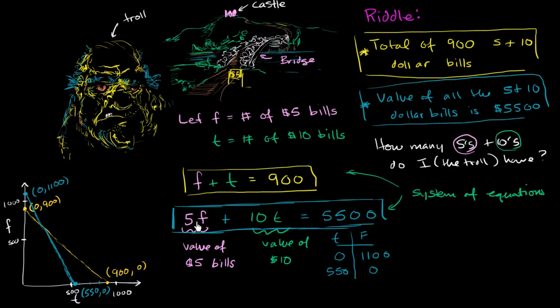So what is a number of fives and number of tens that satisfy both constraints? Well, it would be a point that is sitting on both of the lines. And what is a point that is sitting on both of the lines? Well, that's where they intersect. This point right over here is clearly on the blue line and it is clearly on the yellow line.